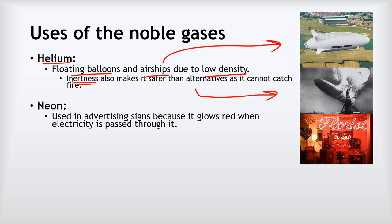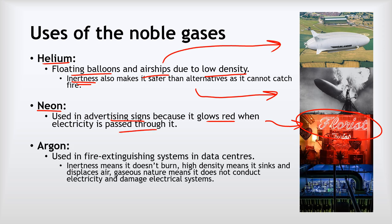The second example is neon. Neon is used in advertising signs. The signs made of red glowing tubes are actually glass tubes filled with neon gas, because neon glows red when electricity is passed through it.